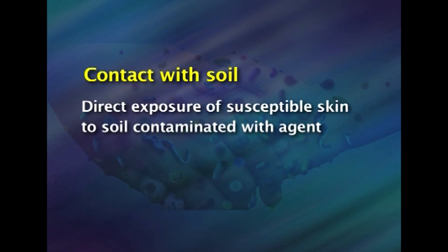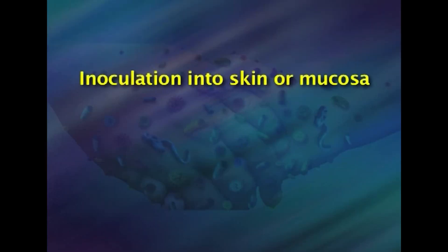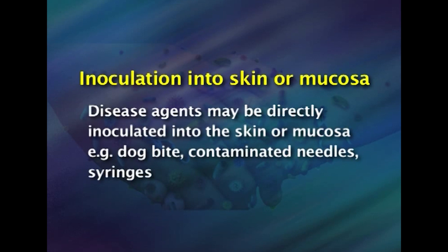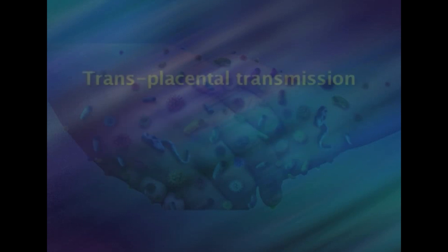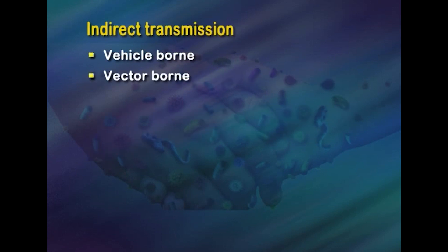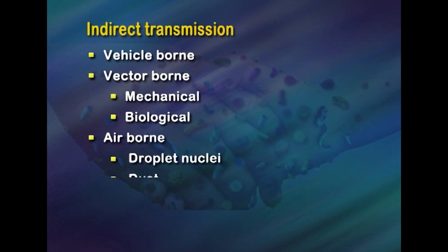Inoculation into skin or mucosa: disease agents may be directly inoculated into the skin or mucosa, as seen in dog bites and contaminated needles and syringes. Transplacental transmission is the transmission of agents through the placenta, seen in AIDS, hepatitis B, and syphilis. Indirect transmission includes vehicle-borne, vector-borne (mechanical or biological), airborne (droplet nuclei and dust), fomite-borne, and unclean hands and fingers.